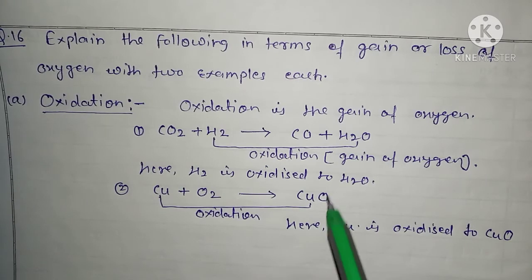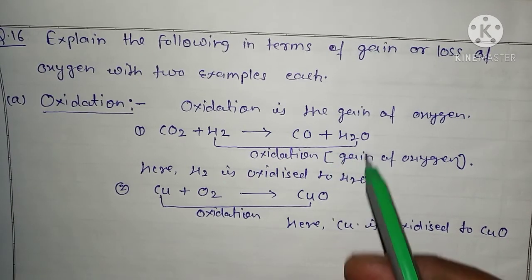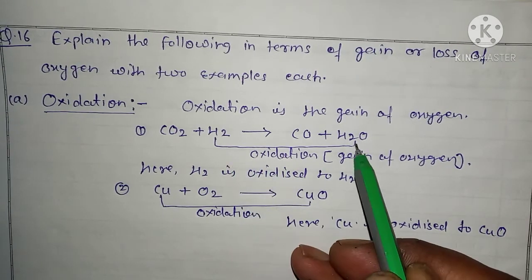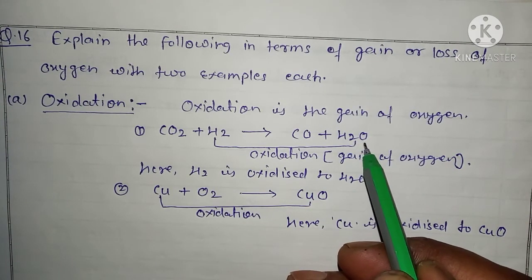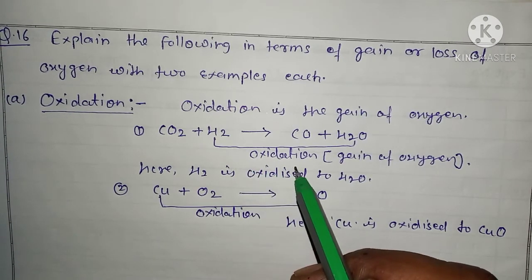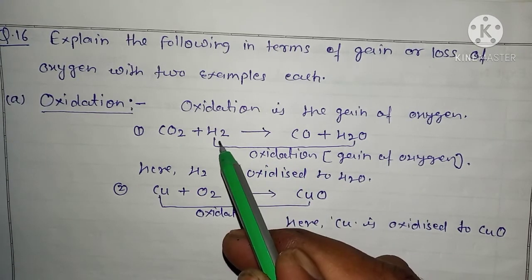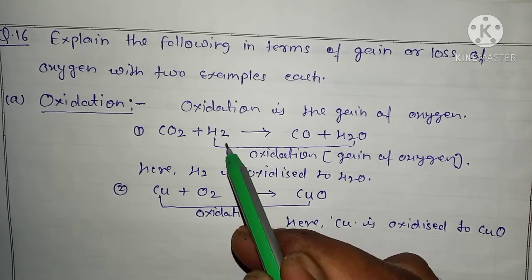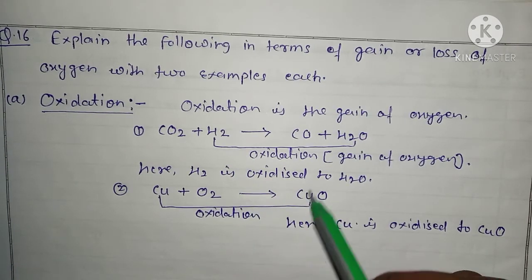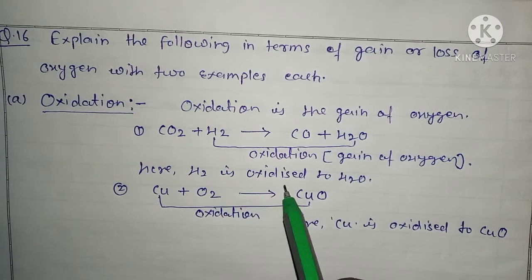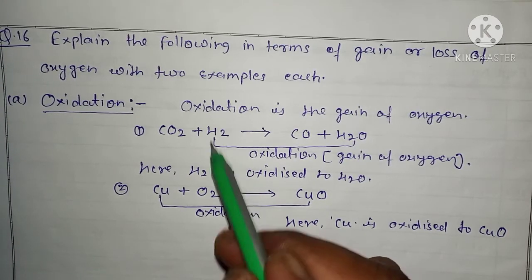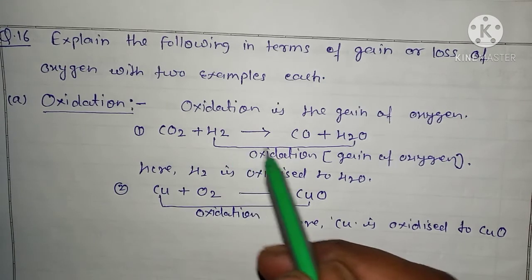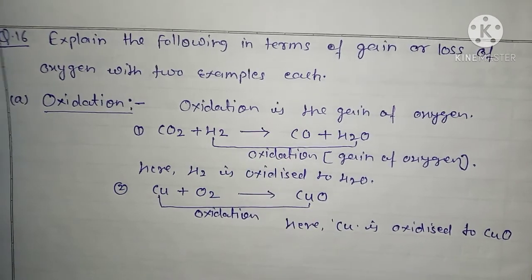Here is example 1: when carbon dioxide reacts with hydrogen gas to form carbon monoxide and water. Here, H₂ is converted to H₂O, meaning oxygen is added to H₂. So H₂ undergoes oxidation — gain of oxygen. H₂ is oxidized to H₂O. This type of chemical reaction is called an oxidation reaction.